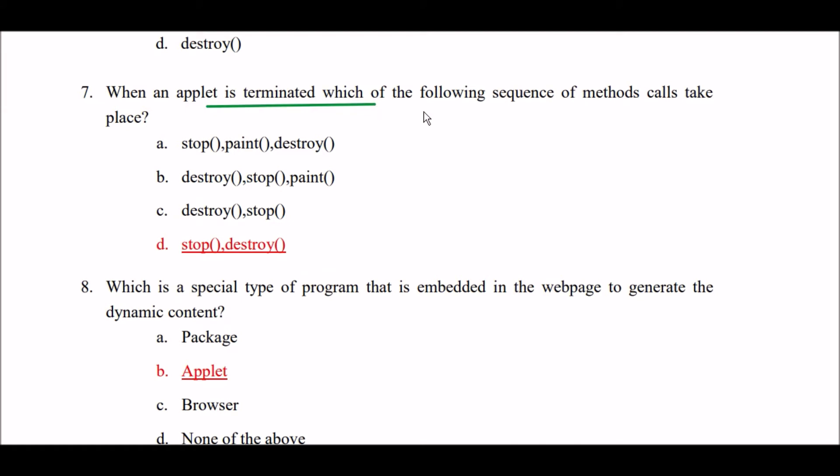When an applet is terminated, which of the following sequence of methods is called? Option A: stop, paint, then destroy. Option B: destroy, stop, then paint. Option C: destroy, then stop. Option D: stop, then destroy. The right answer is Option D — when an applet is terminated, stop method and then destroy method is the sequence called.